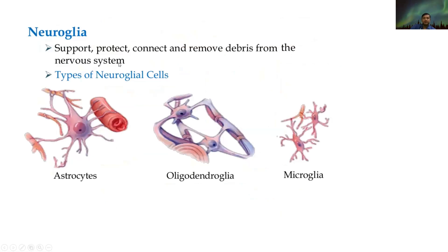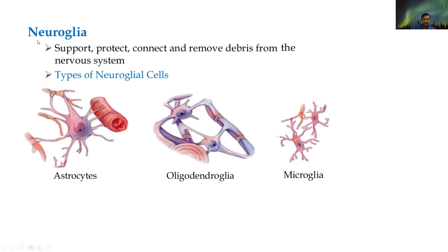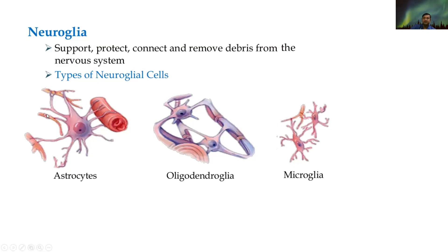Neuroglia supports, protects, connects, and removes debris from the nervous system. If waste material is collected, it is removed by the neuroglia and debris cells. The neuroglial cells are of three types: astrocytes, oligodendrocytes, and microglia. These three types of cells support, protect, and connect with each other within the nervous system.